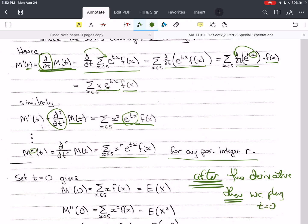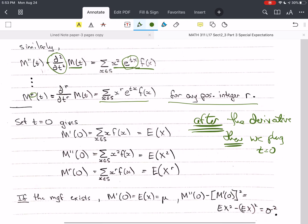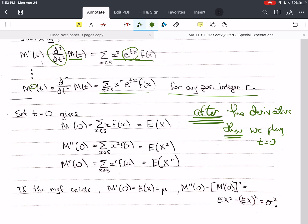after the derivative, then we plug t equals 0. Not before. If you do it before, you're going to mess everything up. In fact, you won't have any t left to take a derivative of. So you would technically get 0, although you'll probably make the mistake and take the derivative with respect to x instead. Big mess. So please don't do that. So we take the derivative, then we set t equals to 0. When we do that,